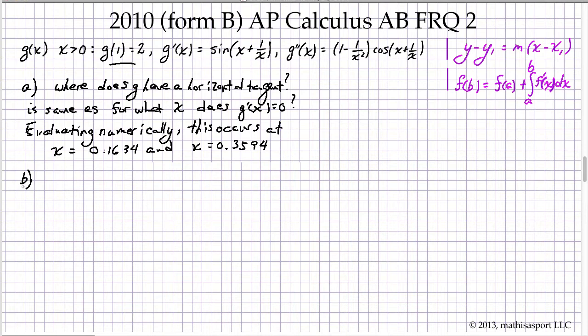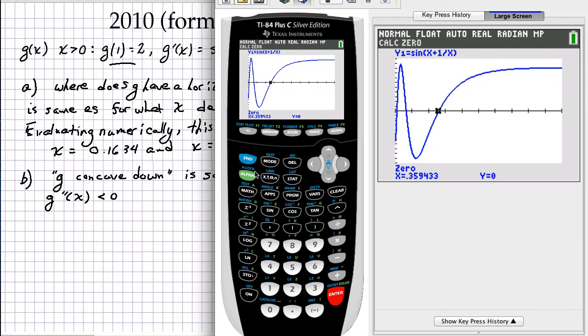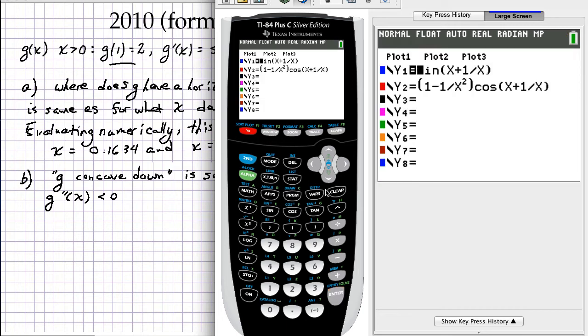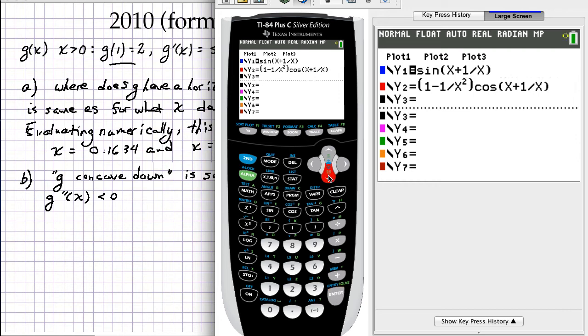Part B wants to know where over that same interval is one or more intervals of G being concave down. Now, G concave down, we have to remember immediately that that is the same as G double prime less than 0. So what we want to find are the edges of this interval, namely the zeros of G double prime, and then confirm that it is below the x-axis. Let's go back to our calculator. And we need to change the formula that we have turned on.